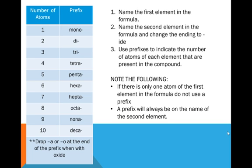You can see these prefixes to the left in the data table. Now, if the prefix ends in A or O, and we're going to use it with oxide, we're going to drop the A and O from the prefix. A couple things to note: if there's only one atom of the first element in the formula, do not use a prefix. However, a prefix is always needed for the second element's name.